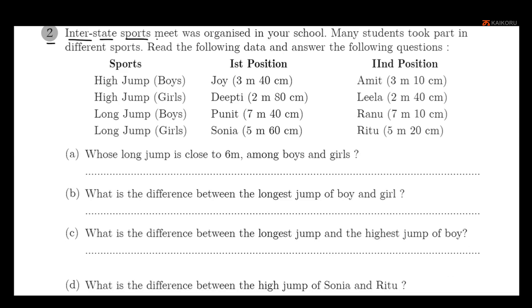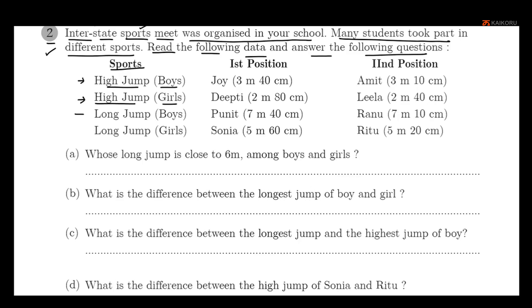Question 2: An interstate sports meet was organized in your school and many students took part in the sport. There is data for high jump and long jump — boys and girls separately — showing who came in first position and how many meters they jumped, and who came in second position and how many meters they jumped.